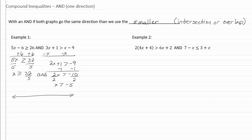So if we put these in order, negative five is here and thirty-two-fifths is over here. Starting with negative five, we're going to have an open dot for negative five and x is greater than that, so it's going to be going to our right. Our thirty-two-fifths is going to be a closed dot, and x is greater than or equal to, so it's also going to our right.